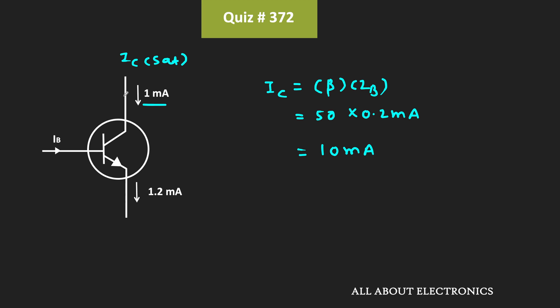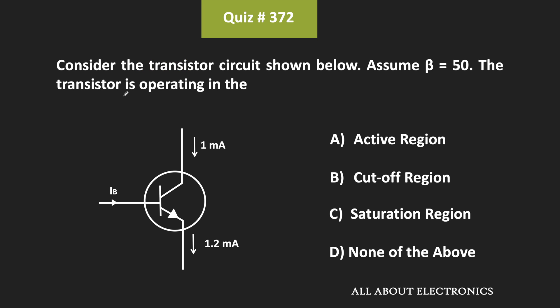So we can say that for the given configuration, the transistor is operating in the saturation region. Therefore, C is the correct answer. Thank you.